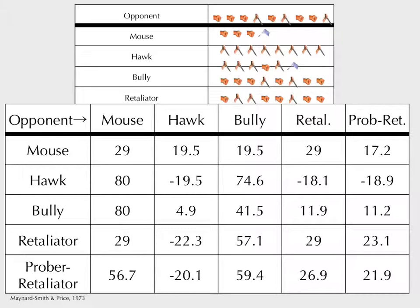Create this series of strategies and figure out the cost-benefit of each. With a computer, you can play them against each other. Mouse versus mouse — they trade punches all day. Mouse versus hawk — the mouse runs away right away. The net benefit: mouse fighting mouse gets 0.9; mouse fighting hawk gets 0.5; retaliator fighting hawk gets 0.23. Hawk versus hawk does very poorly. We figure out what strategy is best across all of these — what's optimal.